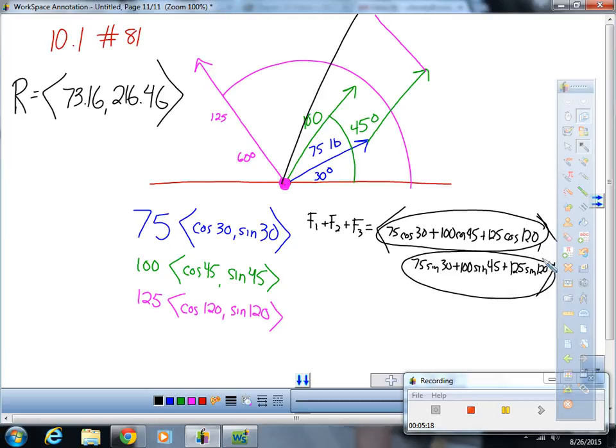Okay, so, hey, look, I feel pretty good about this. If you think about it, if you look at this triangle, it kind of seems like this could be represented by about 73.16. If you compare it to how I drew that green arrow, and then this one could be about 216.46.